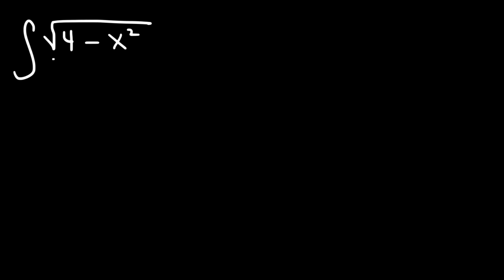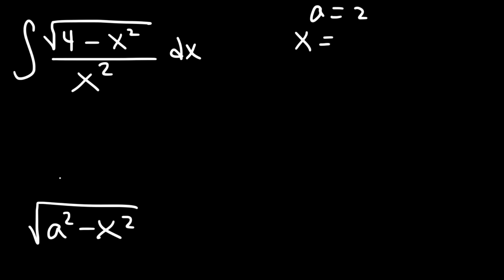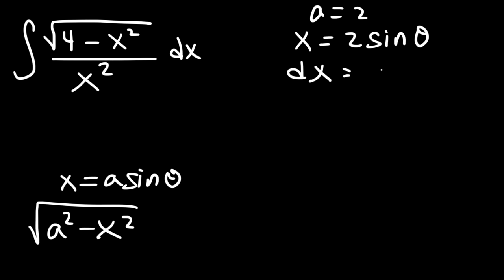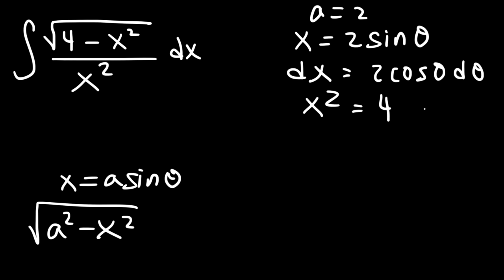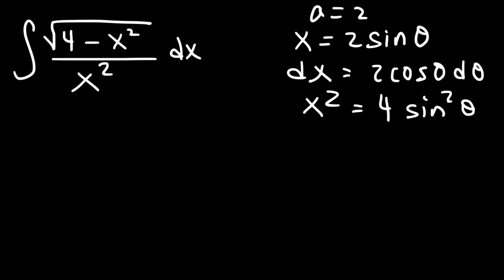Let's find the antiderivative of the square root of (4 minus x squared) divided by x squared dx. We can see that 4 equals a squared, therefore a equals 2. Now x has to equal a sine theta, so in this problem x is 2 sine theta. Which means dx is going to be 2 cosine theta d theta. And x squared is going to be (2 sine theta) squared, which is 4 sine squared theta. We're going to replace x squared with 4 sine squared theta and dx with 2 cosine theta d theta.